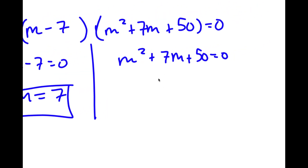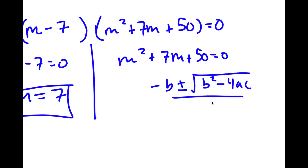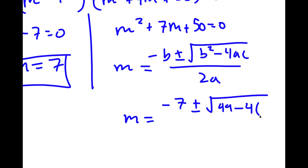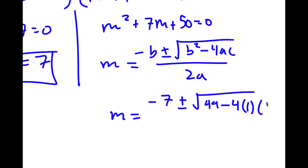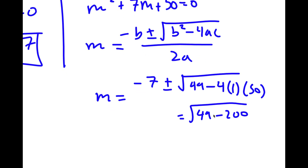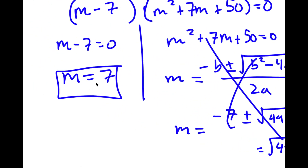For m squared plus 7m plus 50 equals 0, I have to use the quadratic formula: negative b plus or minus the square root of b squared minus 4ac, all over 2a. This gives negative 7 plus or minus the square root of 49 minus 4 times 1 times 50. That's the square root of 49 minus 200, which is a negative number — meaning this won't work. So my only solution is m equals 7.